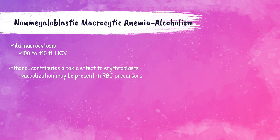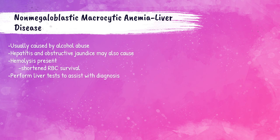Non-megaloblastic anemia caused by alcoholism usually causes mild macrocytosis, with MCVs around 100 to 110 femtoliters. The ethanol in alcoholic drinks can exert a toxic effect on developing red blood cells, and vacuoles may be present in red blood cell precursors in the bone marrow. Non-megaloblastic anemia caused by liver disease is usually related to alcohol abuse, but can also be caused by hepatitis, obstructive jaundice, or other blockages of bile flow. Hemolysis is present in these patients. Liver function testing — including hepatic panels with ALT, AST, ALP, and bilirubin — helps with diagnosis.